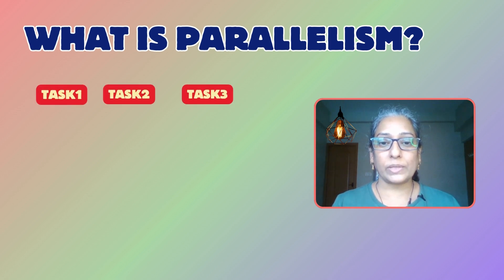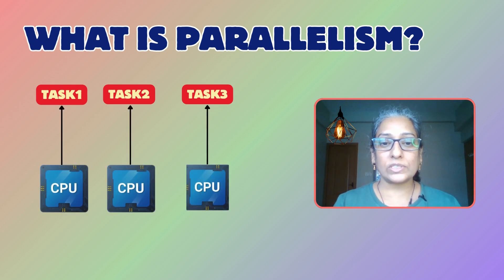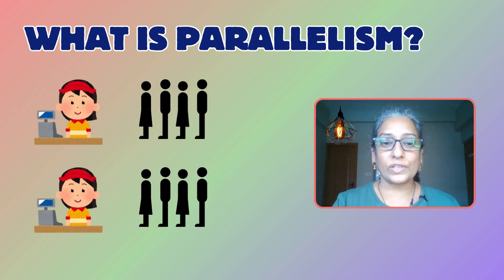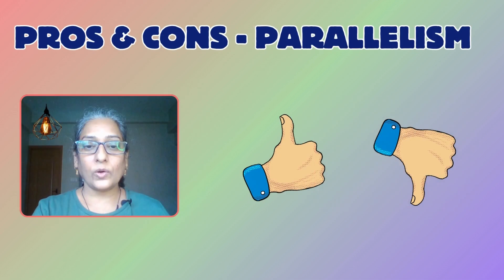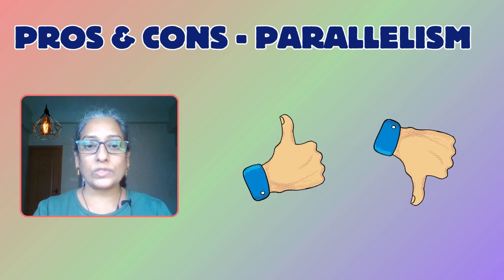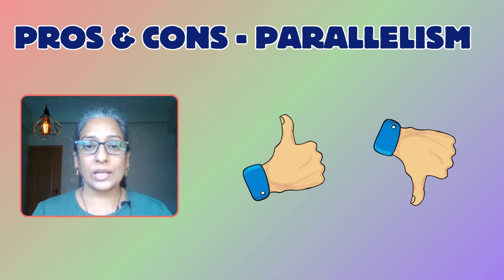Parallelism takes things a step further — it is about performing multiple tasks simultaneously. This requires multiple processors or cores working at the same time. Think of it like having multiple cashiers at the grocery store, with each cashier handling their own customer at the same time.